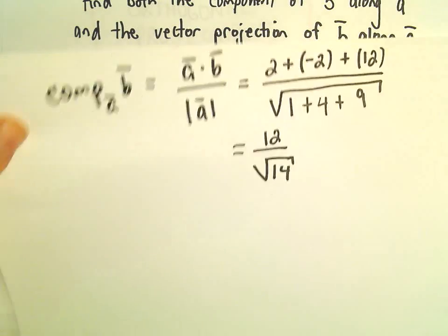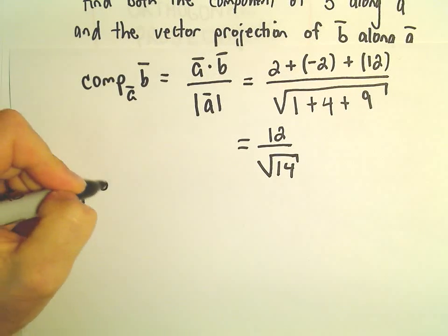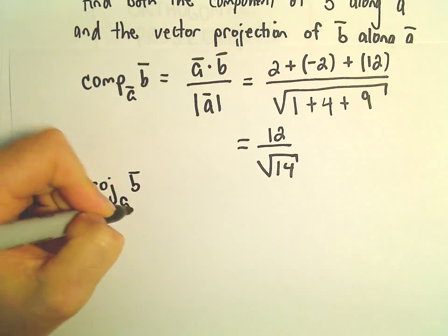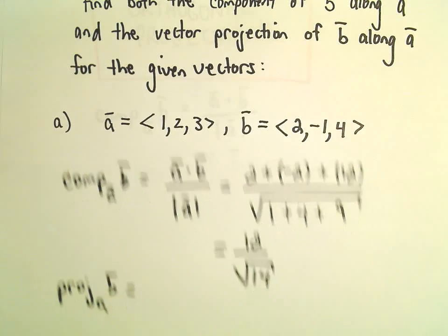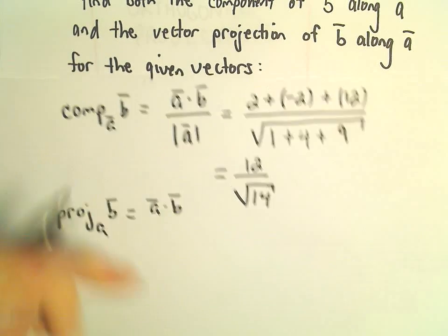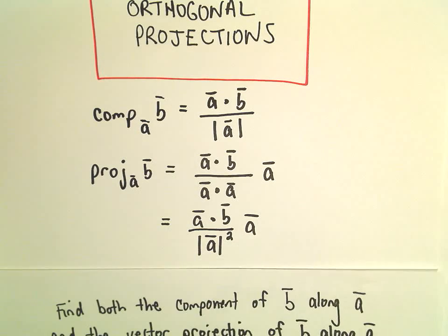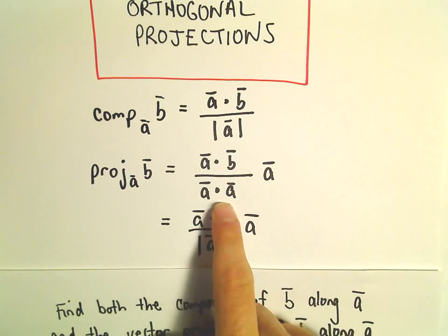To do the projection of B along A, the formula for that we just said was A dot B, and I'm going to use this slightly different, instead of doing A dot A, I'm going to take the magnitude squared.